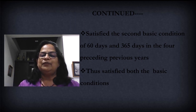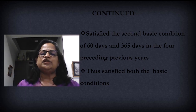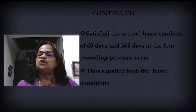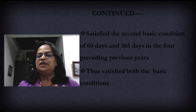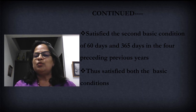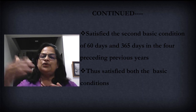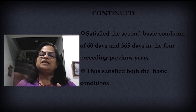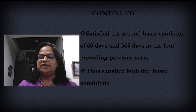For 365 days or more in the four immediately preceding previous years: there was a clue in the question — he was leaving the country for the first time in 2018, meaning till 2018 he was a resident. If he was there for even one full year, 365 days is fulfilled. So you can directly say he was there for 365 days or more in the four immediately preceding previous years. He is satisfying both basic conditions.